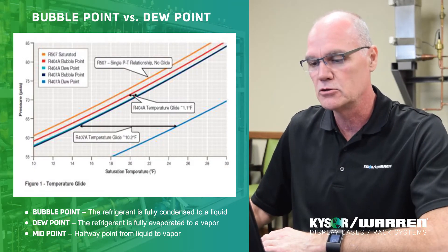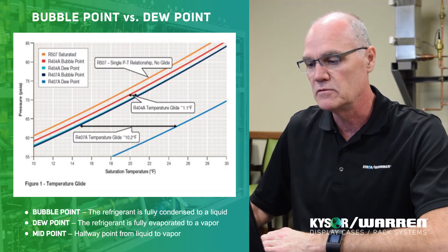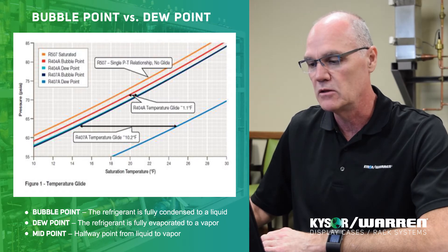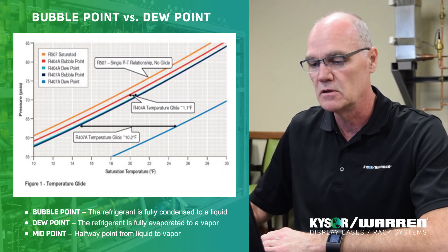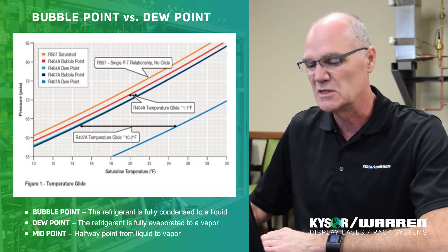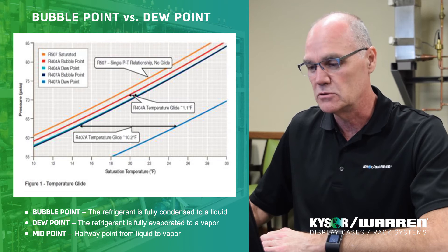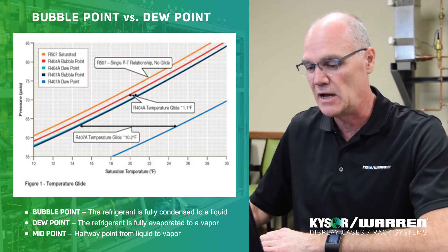If you look at the chart on the screen, the graph shows 507 and 404A, and there's one line that represents each one of those. So if I use 507 for example and I have a temperature of 20 degrees Fahrenheit, that corresponds to a specific pressure of approximately 72 psi. But if you look at a high glide refrigerant, there are two lines, and terms like bubble point, dew point, and midpoint are introduced into the conversation.